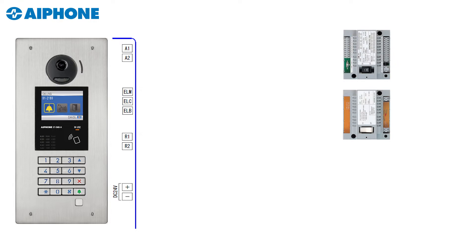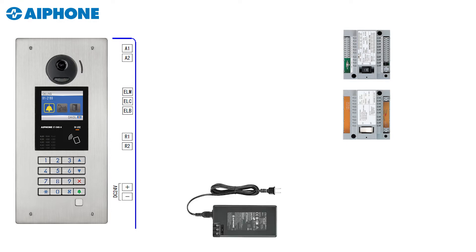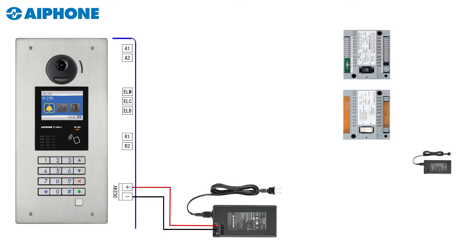Now let's add our power supply, a PS2420UL. We'll take the plus and minus from the entry panel and put that directly to our first PS2420. Then we'll take another PS2420 to power our back end — the GTBC and VBC — sharing that power supply between the GTBC and VBCs.